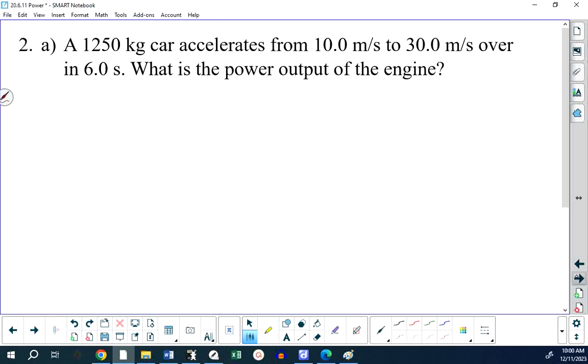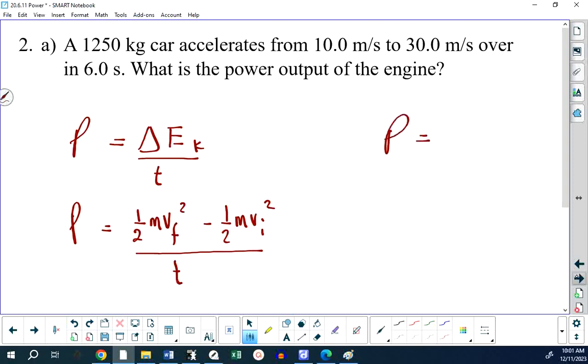Number two. A 1,250-kilogram car accelerates from 10 meters per second to 30 meters per second in six seconds. What's the power output of the engine? In other words, in terms of changing the energy of the car, what's the power? Well, power equals change in energy over time. What kind of energy is being used here by the engine? Well, the useful energy is going into kinetic energy of the car. So we're going to take the final kinetic energy minus the initial kinetic energy and divide by the time.